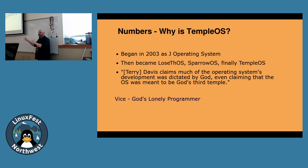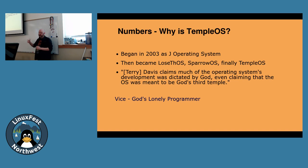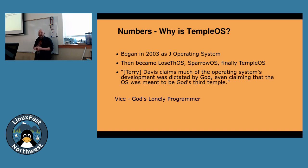I've explained a lot of what's in Temple OS, but I haven't said anything about why it exists. It started in 2003, written by a guy pretty much single-handedly — his name was Terry Davis. It began life as the J operating system, went through some name changes, got popular online while he was promoting LoseThos and Sparrow OS, and eventually he called it Temple OS. Davis claims much of the OS's development was dictated by God, even claiming the OS was meant to be God's third temple. There's a really good article that Vice wrote called God's Lonely Programmer that I recommend you check out.